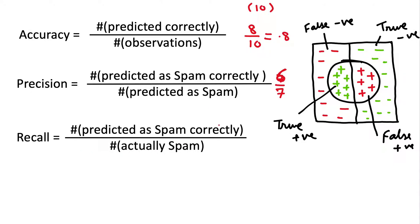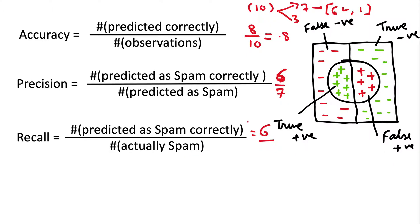For recall, the numerator is the same — the model predicted 7 as spam and 3 as non-spam. Out of those 7, it got 6 correct and 1 wrong, so the numerator is again 6. But the denominator changes: it is the total number of messages that are actually spam. Let's say there are actually 9 spam messages in the dataset, so the denominator is 9.